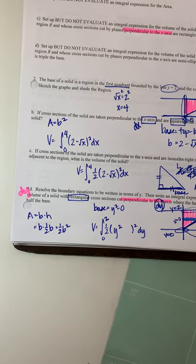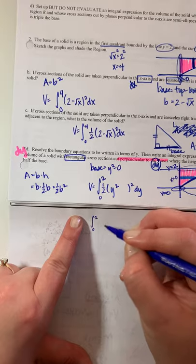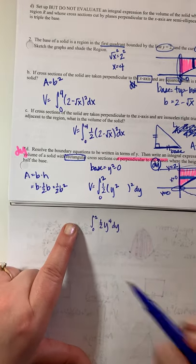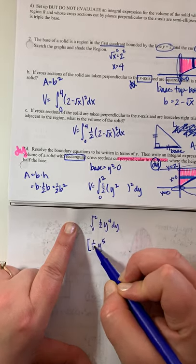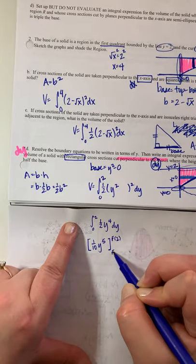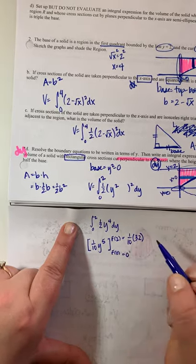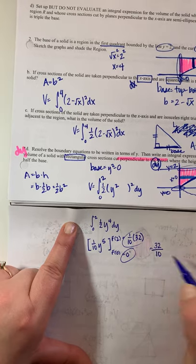This one is easy to work out by hand. One-half times y squared squared is one-half times y to the fourth. Using the power rule, integrate to get one-half times y to the fifth over 5, which is one-tenth y to the fifth. Evaluate from 0 to 2: two to the fifth is 32, so 32 over 10 equals 3.2.